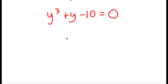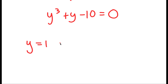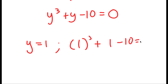Now, what I need to do is first find one solution of y, and then once I have that solution, I can find the remaining solutions. To find that first solution, I'm just going to test values of y. Starting with y equals 1: I have 1 to the power of 3 plus 1 minus 10 equals 0. Well, 1 to the power of 3 is 1, 1 plus 1 is 2, 2 minus 10 is negative 8, which does not equal 0. So this does not work.